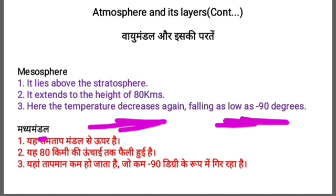So this is our mesosphere. It starts after stratopause where the stratosphere ends. Its height is 80 kilometers. The temperature decreases again, as low as minus 90 degrees centigrade — similar to what we studied in the troposphere. The temperature falls to minus 90 degrees centigrade in the mesosphere.